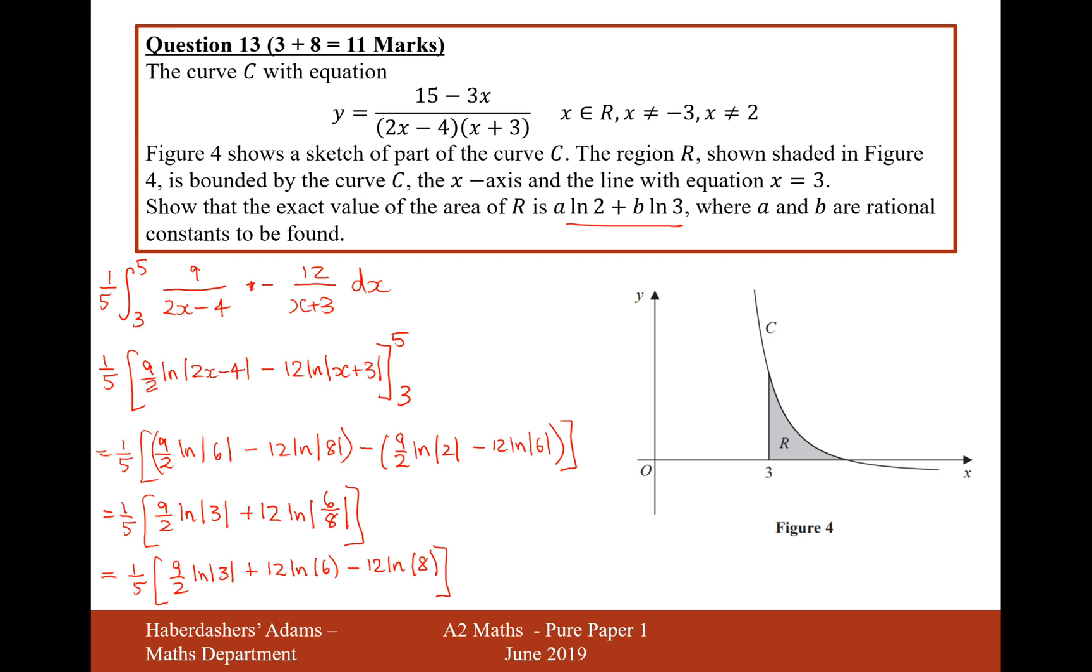Let's just create some more space for me to do this. We can split the 6 up into a ln 2 plus a ln 3. So it's going to be a 5th, 9 over 2 ln 3 plus 12 ln 2 plus 12 ln 3. So I've split up this into 12 ln 2 plus 12 ln 3. And then this one here, that's going to be a 2 to the power of 3. If I factorise that 3 out to the front, it would be minus 36 ln 2.